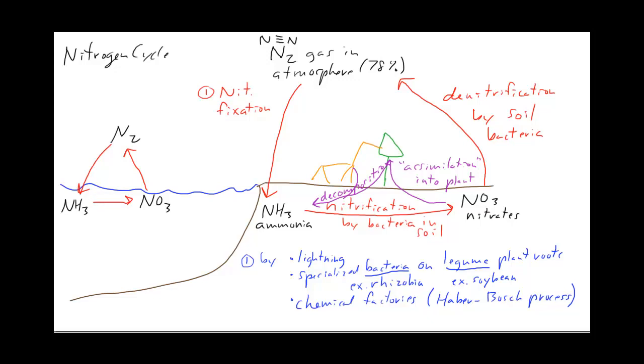Now as far as the last part here, looking at human influence. We've had a pretty strong influence on this nitrogen cycle. So human impact, and that's mostly through our development of this process, this chemical process, the Haber-Bosch process.